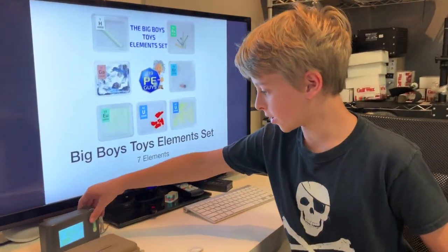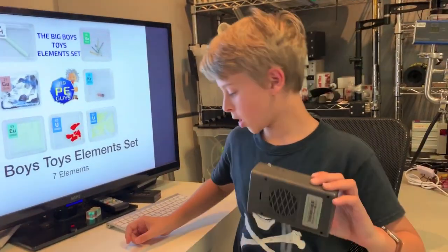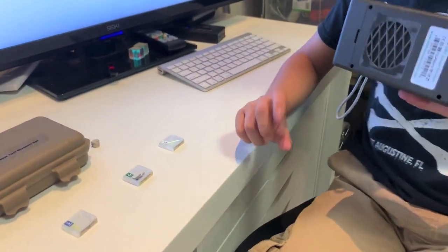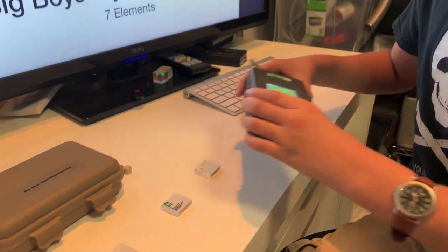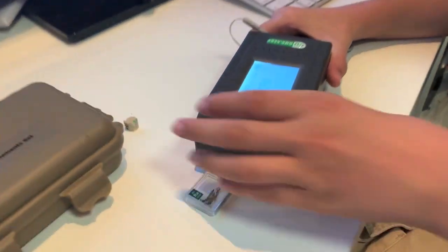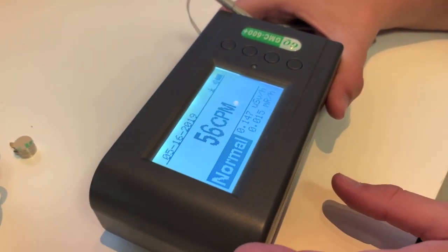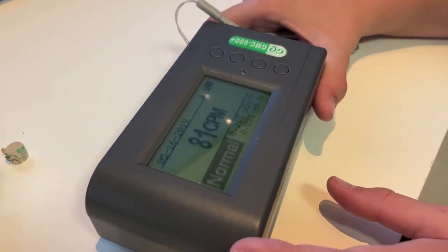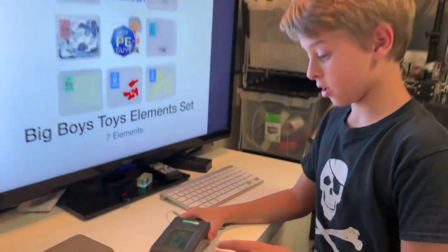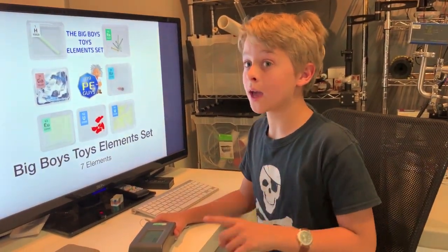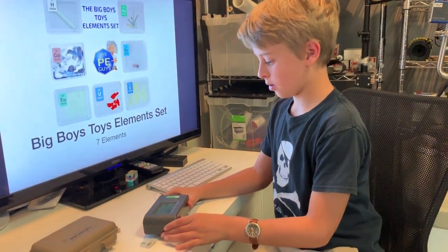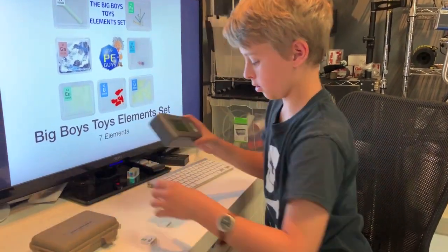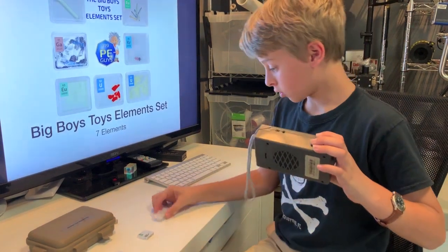Now for the fun part, the Geiger counter test. First up we have tritium, the hydrogen isotope that actually glows in the dark with a half-life of 12 years. Put the Geiger counter on there. As you can see, it is definitely radioactive and that's within two cases which block alphas. Now let's go on to the next one.